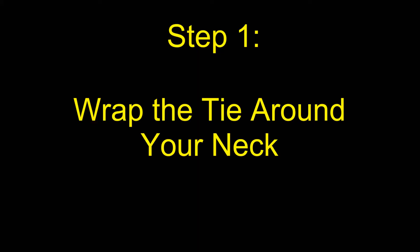Step 1: Wrap the tie around your neck. In order for you to properly tie a tie, you'll need to give yourself enough length to both tie the knot and to make both ends even with one another. As a general rule of thumb, it's best to leave the short end with a third of the tie and then the long end with the rest of it. And once you've properly wrapped the tie around your neck, you'll proceed to step number two.